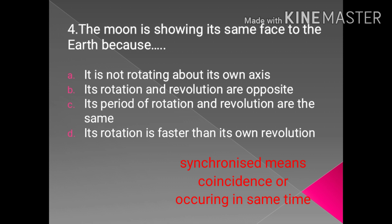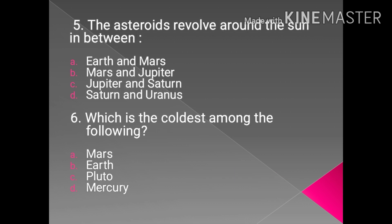Synchronized here means the coincidence of occurring at the same time. It means the revolution and the rotation have the same period of time for the moon. In other words, we can say the moon rotates exactly once every time it circles the Earth. It is because of the strong gravitational pull of Earth.